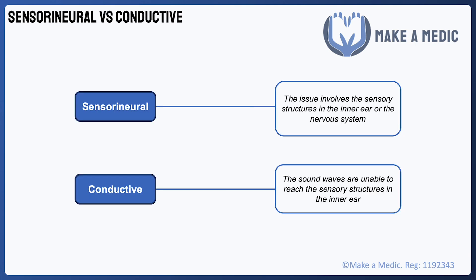We can formally define sensorineural hearing loss as an issue involving the sensory structures in the inner ear or the nervous system. On the other hand, conductive hearing loss is when the sound waves are unable to actually reach the sensory structures in the inner ear because the conduction pathway is affected.